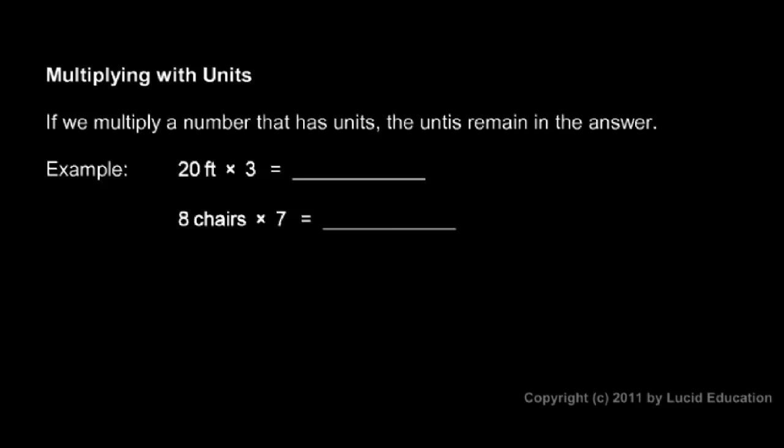If we're multiplying a number that has units, we have to deal with the units. We can't ignore them. Typically, they remain in the answer. If I have 20 feet times 3, well, I multiply the numbers 20 times 3 and I get 60, but the units are still around. They stay, so I have 60 feet for my answer.